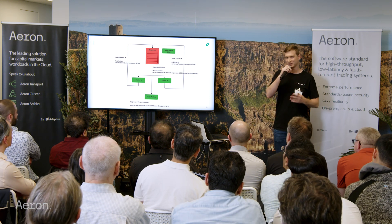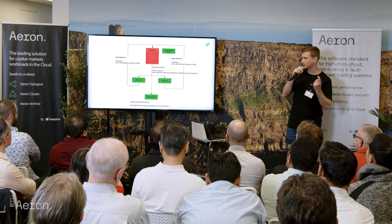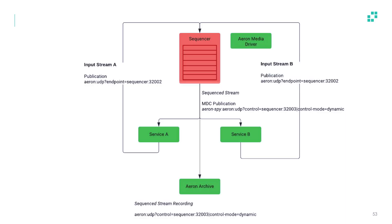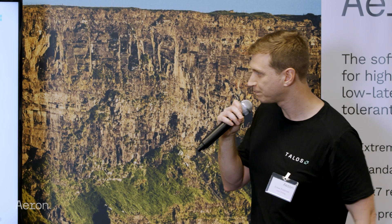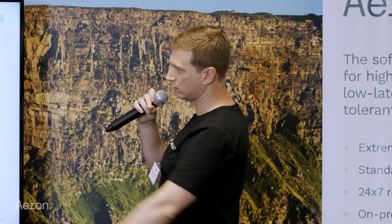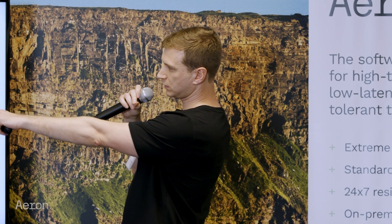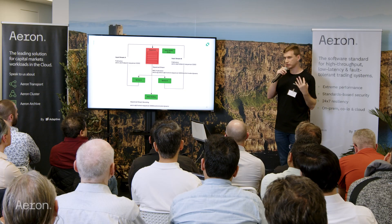The cool thing about Aeron is how easy it is to take the tools out of the box and compose them to build this system. The basic pieces: for the sequence stream we use an MDC — multi-destination cast — publication. We mostly run in the cloud so we use that instead of native multicast. We have the archive set up to record that stream with one recording, which means every message that gets sequenced has a unique byte position that we use to resume and replay messages. Our services use regular publications to write to a well-known port the sequencer is listening on, and the sequencer combines images from each service into a single output that has total ordering.